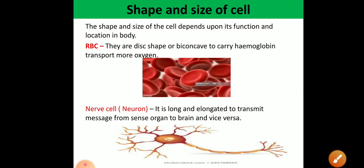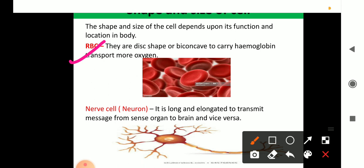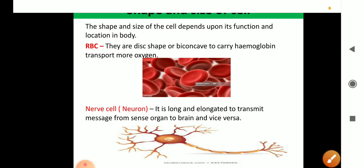Next is the shape and size of the cell. The shape and size of cells depend on their function and location. For example, RBCs — red blood cells — are disc-shaped and biconcave. Due to this structure, they have more surface area, so they can carry more hemoglobin and transport more oxygen. The nerve cell, called a neuron, is a long, elongated cell used to transmit messages from sense organs to the brain or vice versa. Its length may be up to one meter.